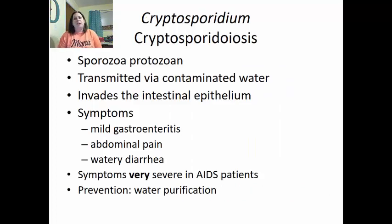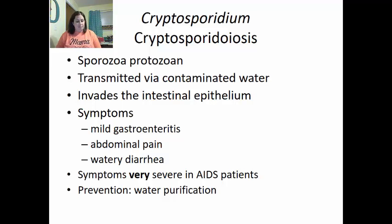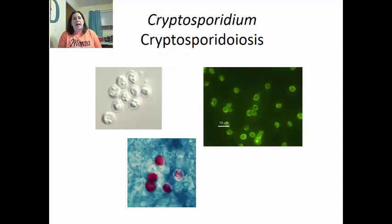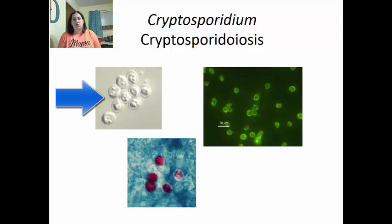Cryptosporidium is a sporozoan protozoan transmitted via contaminated water. It invades the intestinal epithelium, causing mild gastroenteritis, abdominal pain, and watery diarrhea. Symptoms can be very severe in AIDS patients. Prevention is water purification. No movement is seen on the saline mount since it is a sporozoan, but different staining methods allow visualization of its structures.